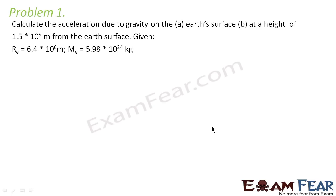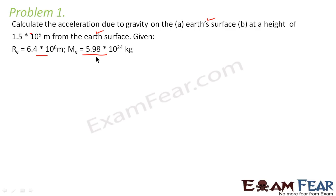Problem 1 says: calculate the acceleration due to gravity on the earth's surface — that is the first part. Second part: at a height of 1.5 × 10⁵ meters from the earth's surface. Given: radius of the earth is 6.4 × 10⁶ meters and mass of the earth is 5.98 × 10²⁴ kg.